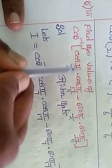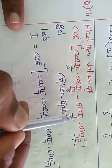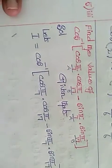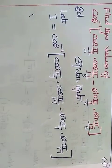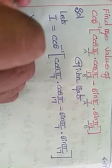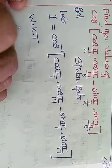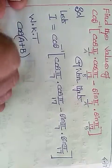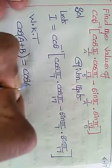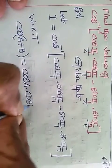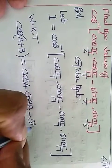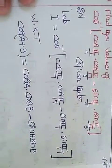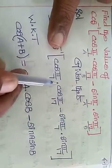So at the same time cos a cos b minus sine a into sine b, one formula is there students. You know that we know that cos of a plus b is equal to cos a cos b minus sine a sine b. One trigonometry formula is there.